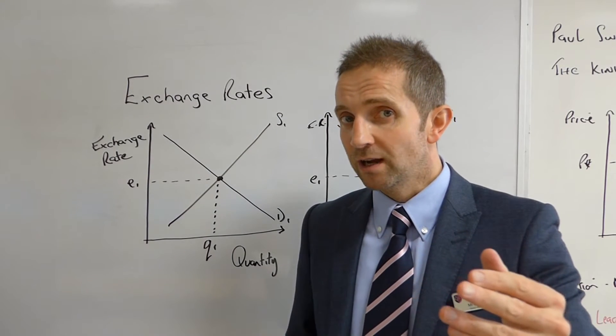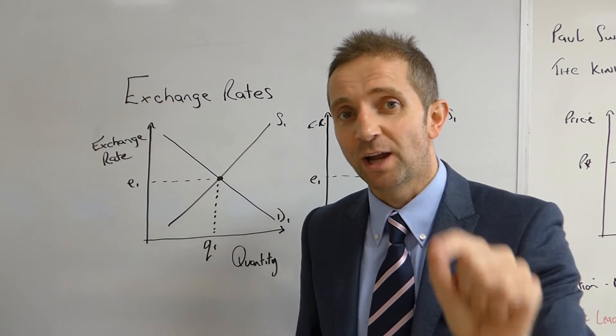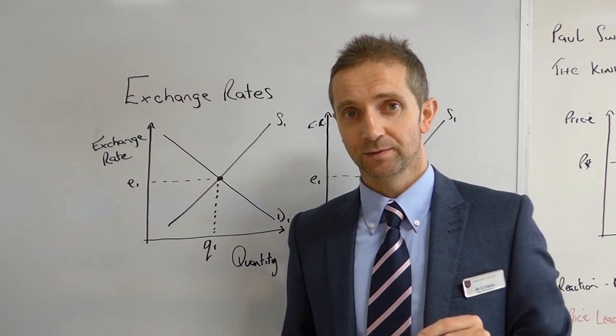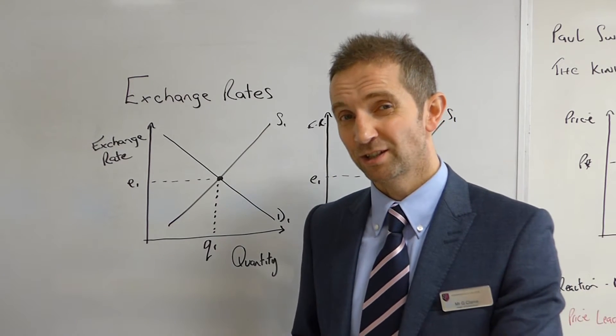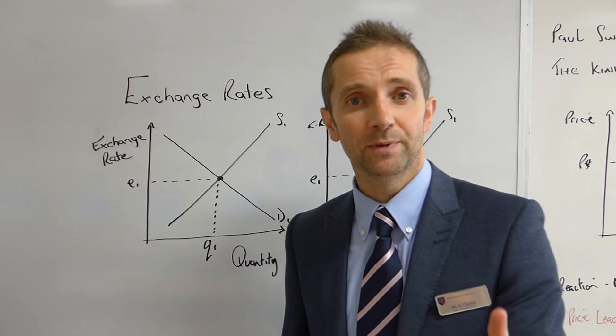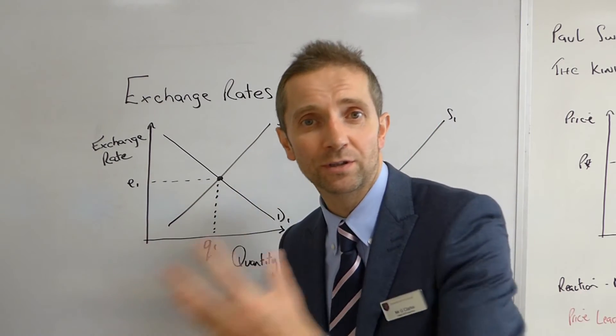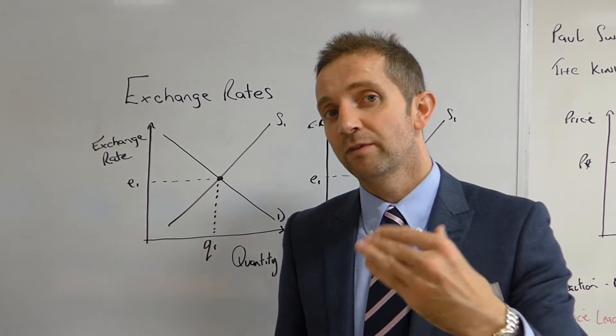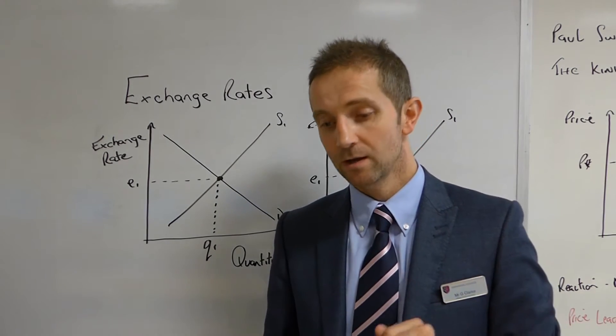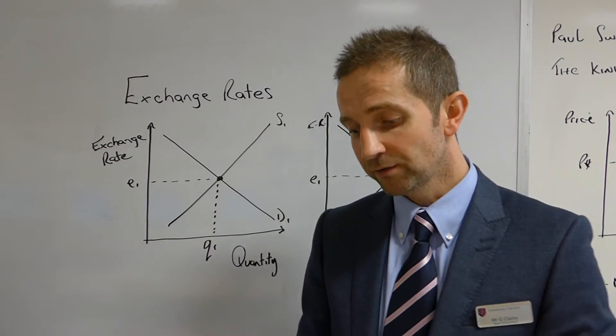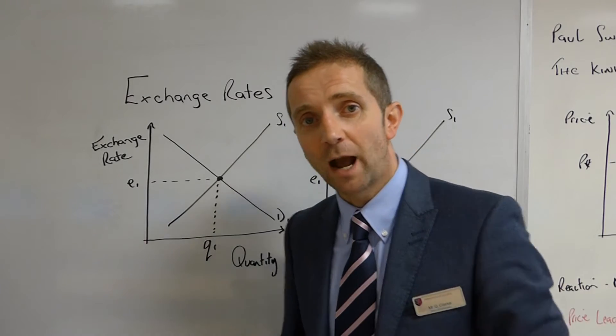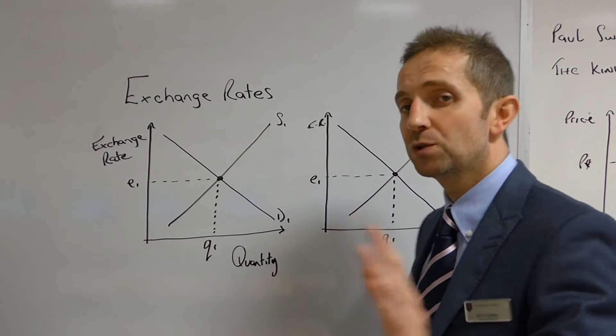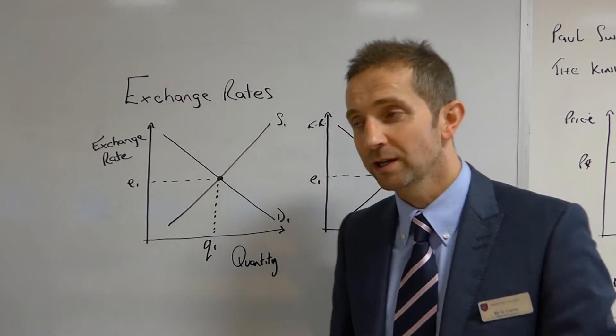Now that was all very well during the good times, but when things turned sour in these economies and recession really started to bite, well of course what happened to the capital? It all shot out of these countries. Now that, as we know in economics, we refer to that as capital flight. Now in the normal course of things during capital flight, this is what would happen. And this is where we need to refer to our exchange rates diagram.